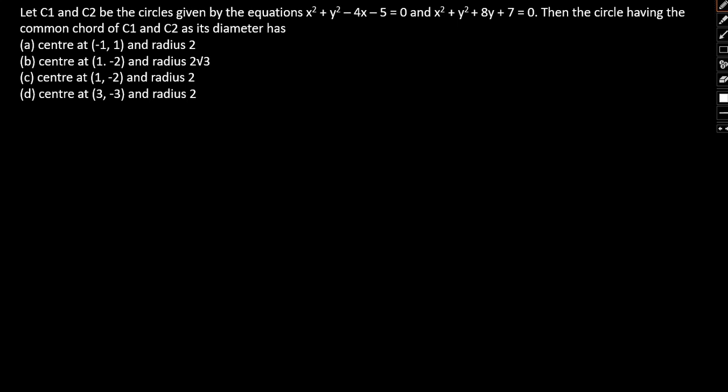Let C1 and C2 be the circles given by the equations x² + y² - 4x - 5 = 0 and x² + y² + 8y + 7 = 0. Then the circle having the common chord of C1 and C2 as diameter has: (a) center at (-1, 1) and radius 2, (b) center at (1, -2) and radius 2√3, (c) center at (1, -2) and radius 2, and (d) center at (3, -3) and radius 2. So basically we need to figure out the center and the length of the radius.